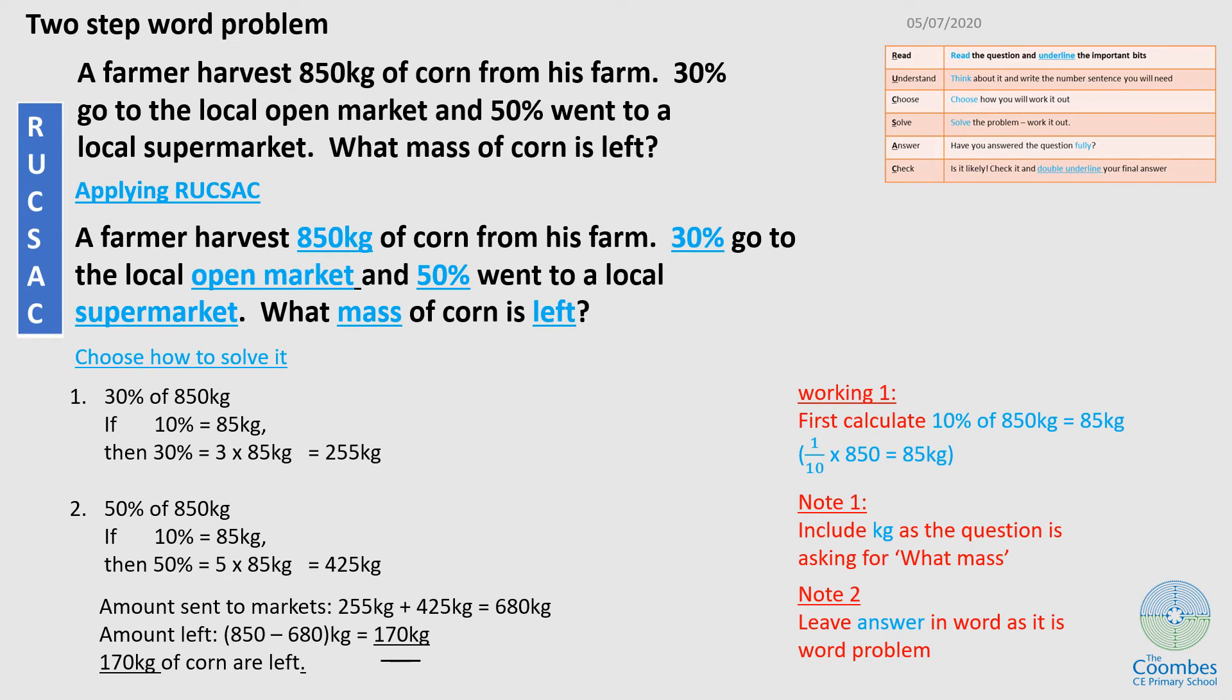Right. This is a two-step word problem. A farmer harvest 850 kg of corn from his farm. 30% go to the local open market and 50% went to a local supermarket. What mass of corn is left?